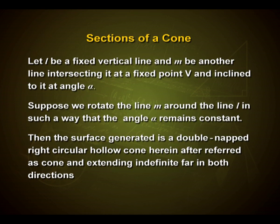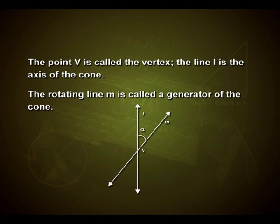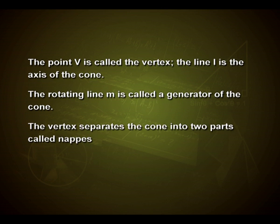Then the surface generated is a double-naped right circular hollow cone, extending indefinitely far in both directions. The point V is called the vertex, the line L is the axis of the cone, the rotating line M is called a generator of the cone, and the vertex separates the cone into two parts called nappes.